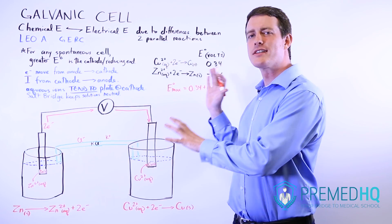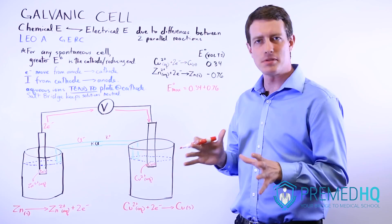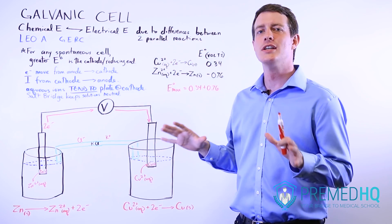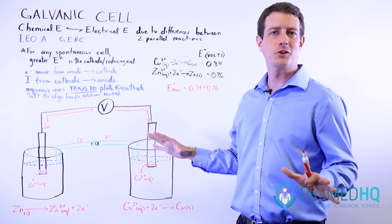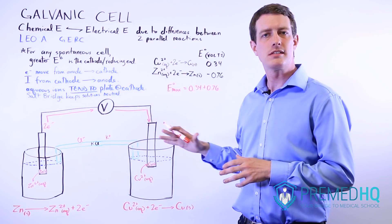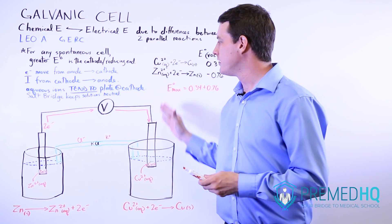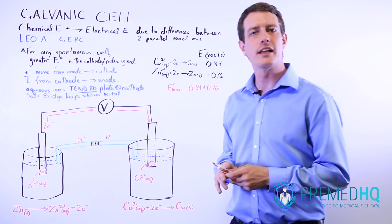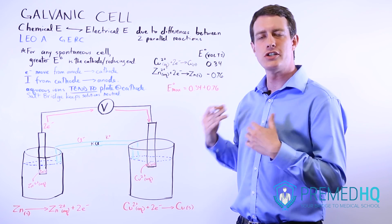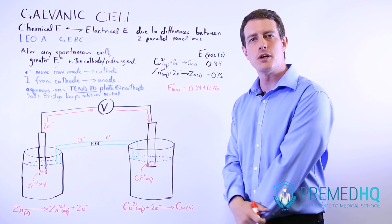This is a fairly complex looking board, but it will allow us to understand the galvanic cell, which will set the foundation for the discussion of all electrochemical cells after this. We'll work through this piece by piece and see how the flow of electrical energy operates much like a circuit and how this circuit can generate voltage and ultimately energy that we can use.